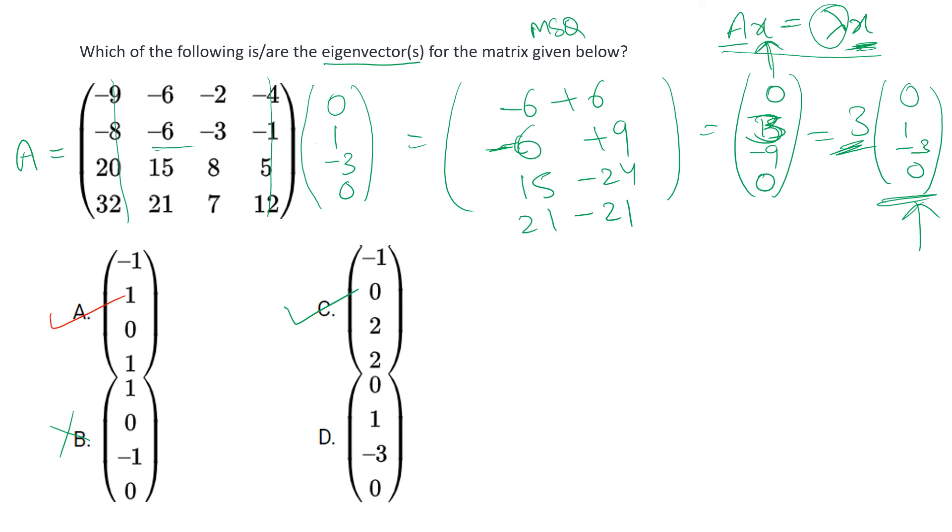This was a 4×4 matrix and for that we have got all the three eigenvectors by substituting the options. So the answer for this question would be A, C, and D.